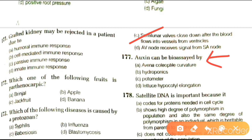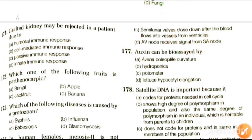Next question: auxin can be bioassayed by Avena coleoptile curvature test, by hydroponics, by photometer, or by pea hypocotyl elongation. The answer is by Avena coleoptile curvature.